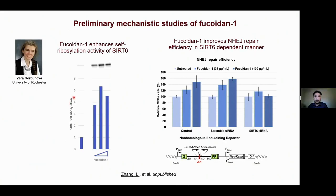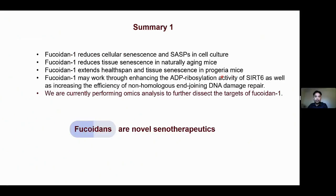To identify the mechanisms, we collaborated with Dr. Gomanova's group and found that fucoidin one may exert its senotherapeutic effects through enhancing SOD6 reposulation activity and improving DNA damage repair in a SOD6-dependent manner.